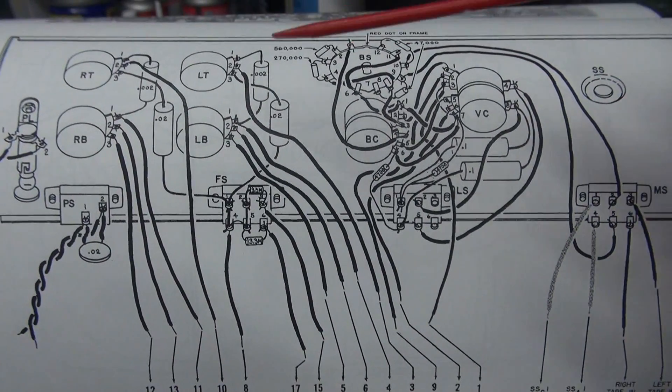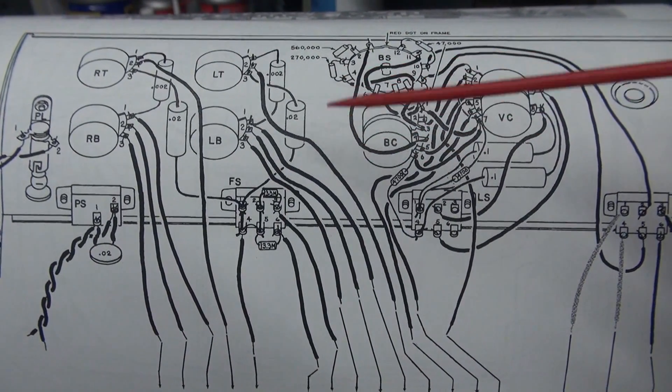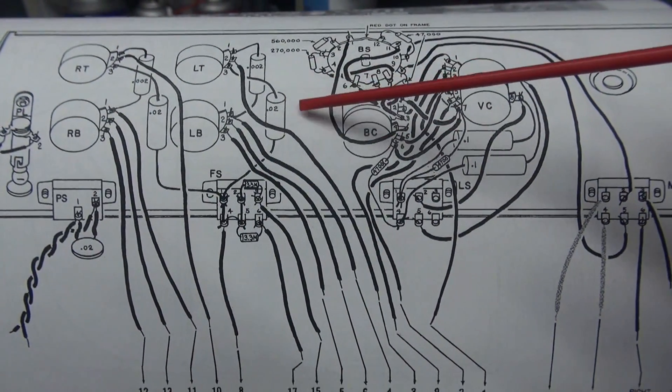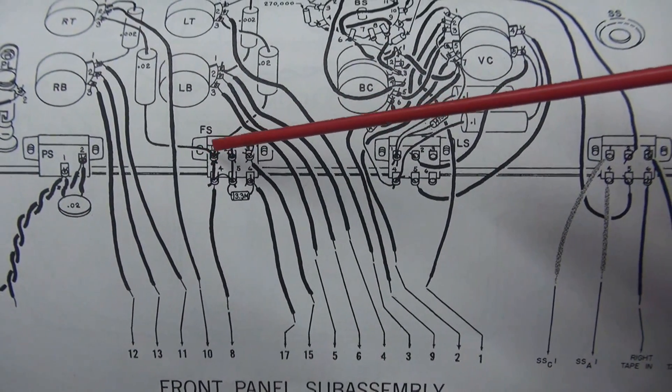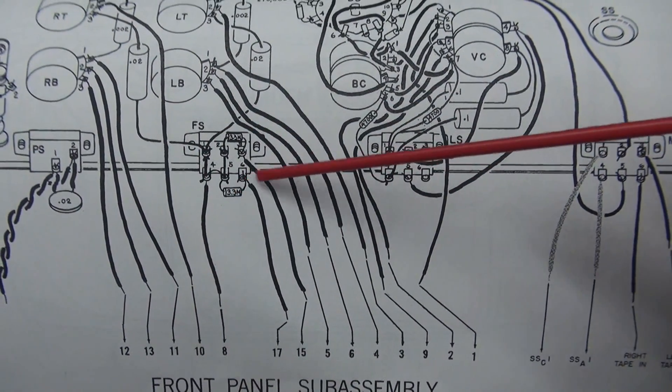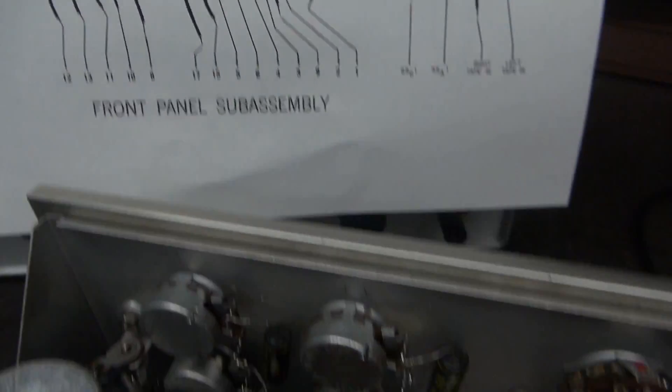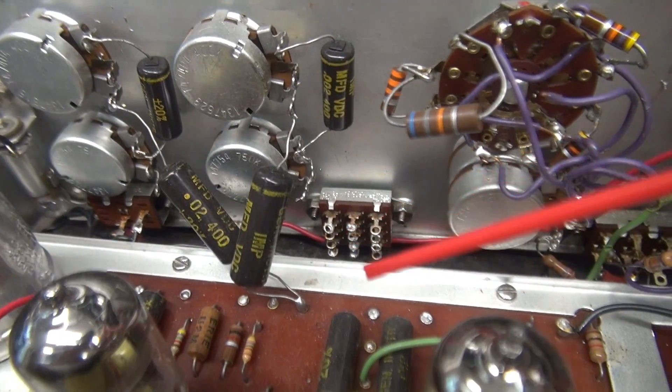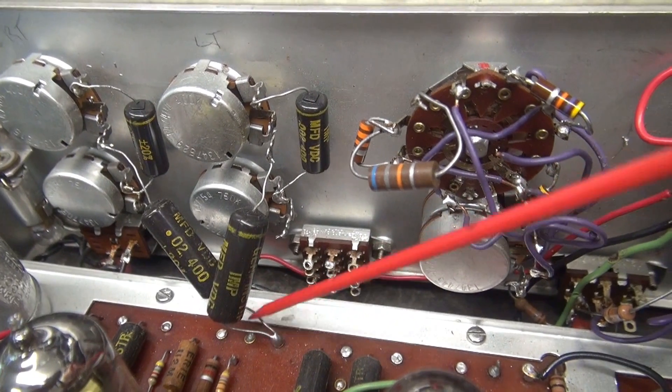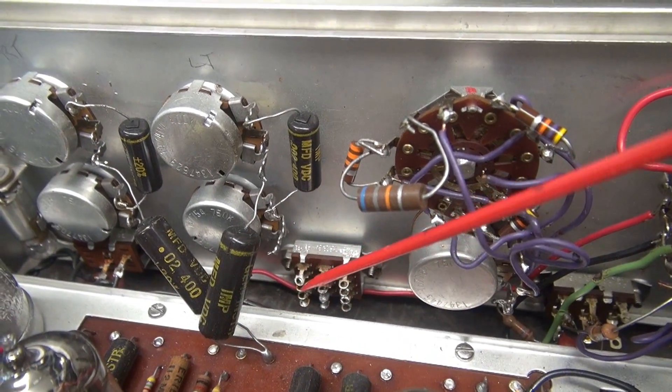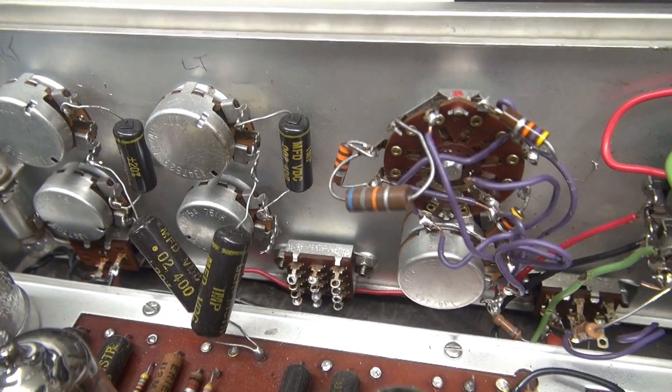So luckily, Dynaco has these great diagrams how it was originally wired. So you see that 0.02 cap there and there? They used to go down to the switch. And there are those 3.3 mega resistors. So if you look here, you can see what they did is they disconnected from the switch, swung them over there. So I just got to get that back over there. Get the resistor rods in there and hook back to that terminal.